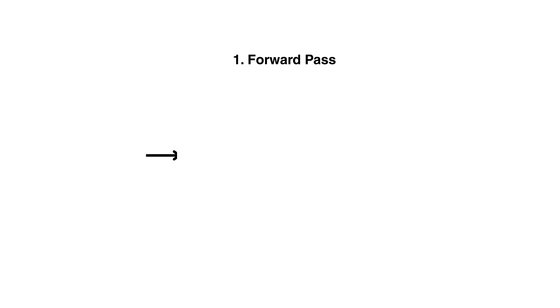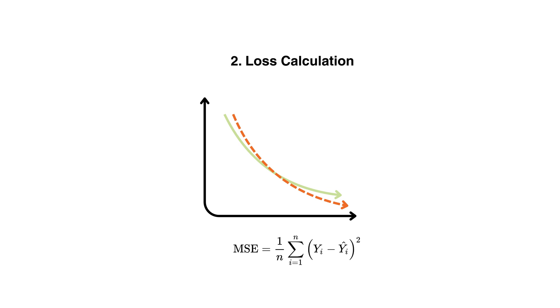Forward pass: input data is fed into the network. Each neuron applies a weight and bias and passes the result through an activation function like sigmoid. The network produces an output. Loss calculation: the output is compared with the actual or true value using the loss function, for example mean squared error or cross entropy. This gives a value indicating how far off the prediction was.